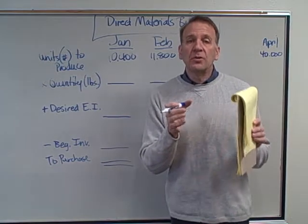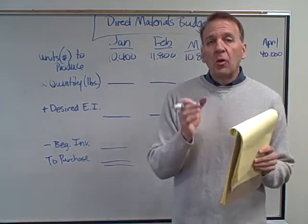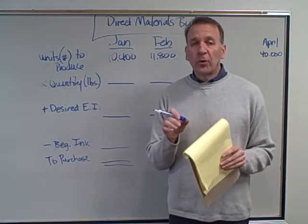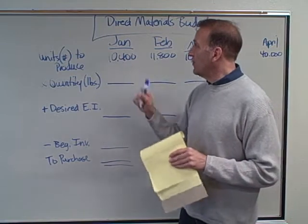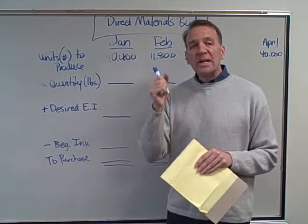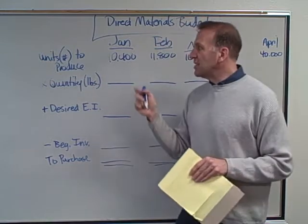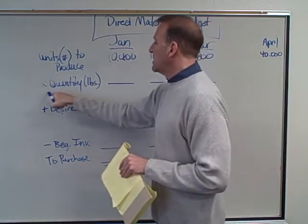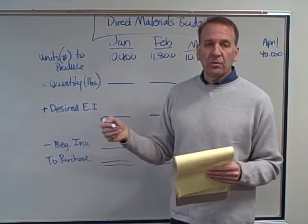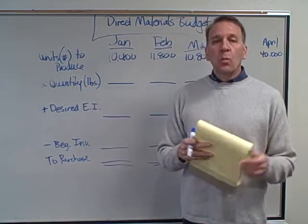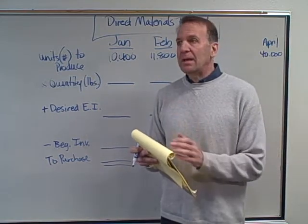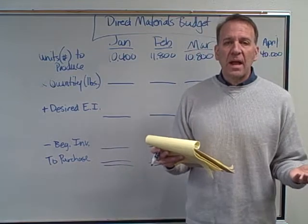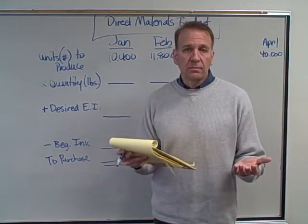Now we're preparing the direct materials budget. We need four pounds of tomatoes for each case. So we're producing 10,400 cases in January and we need four pounds of tomatoes to manufacture each case. That's why we have here: units to produce times the quantity — in this case, pounds.